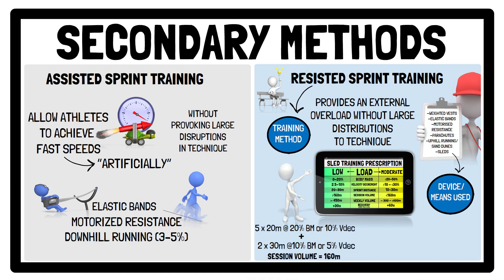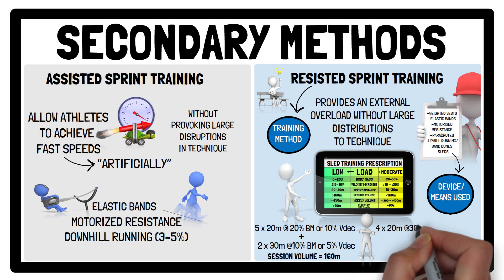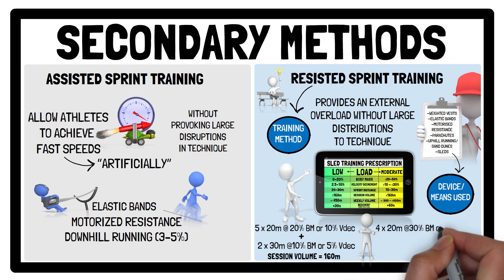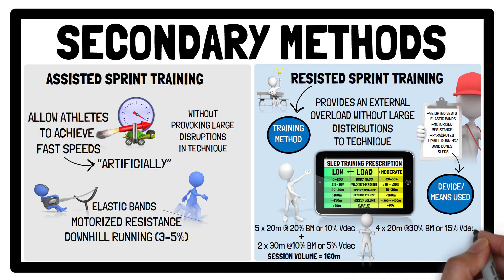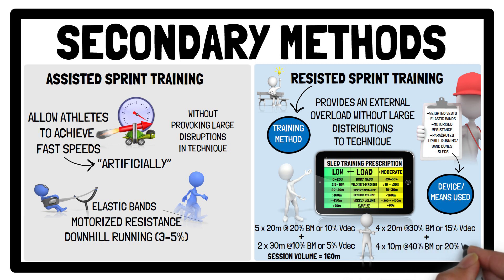Whereas a session example using a moderate sled load includes performing 4x20 metres at 30% body mass or 15% velocity decrement, as well as 4x10 metres at 40% body mass or 20% velocity decrement.